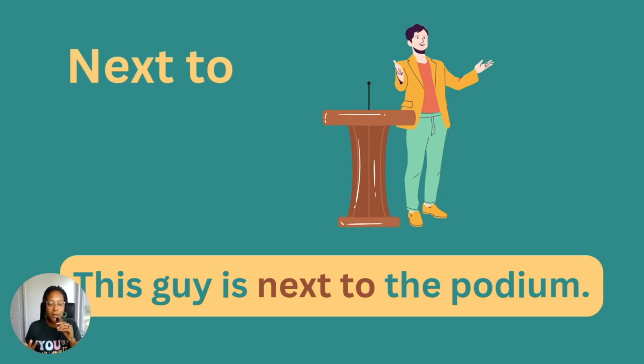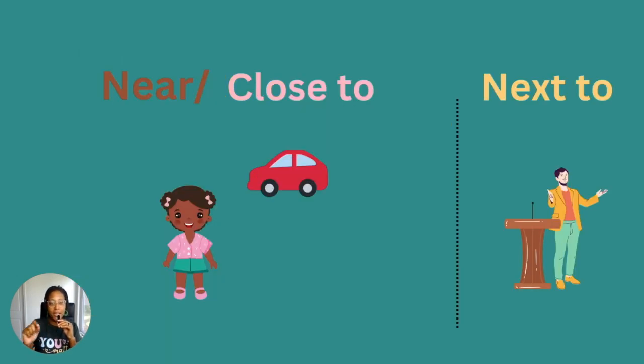So, the next time you get confused about near and close to, remember, they're synonymous. And then for the word next to, you're right there beside it. The physical distance is zero. You can touch it.